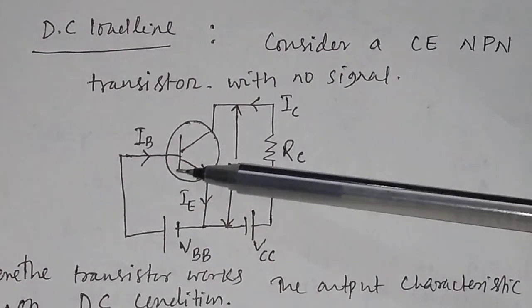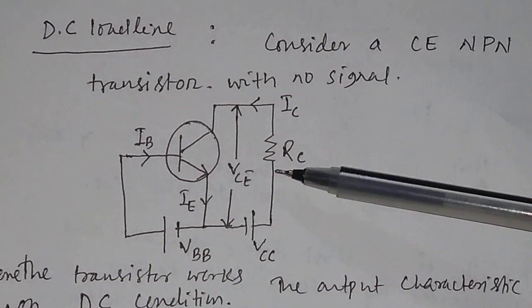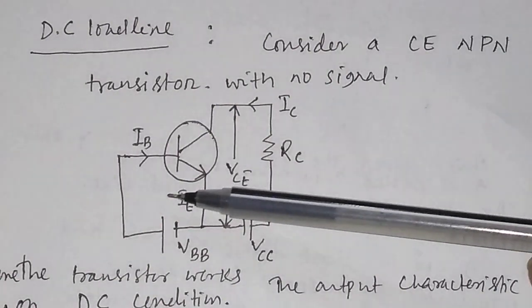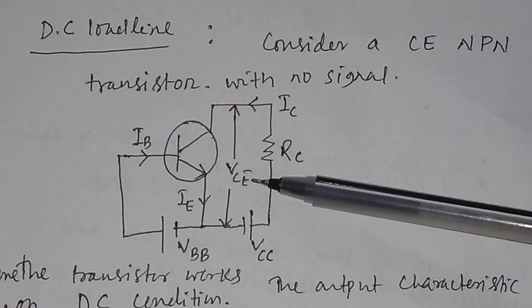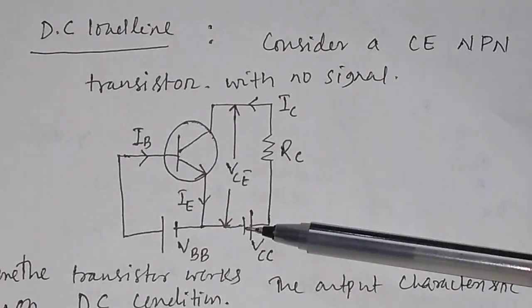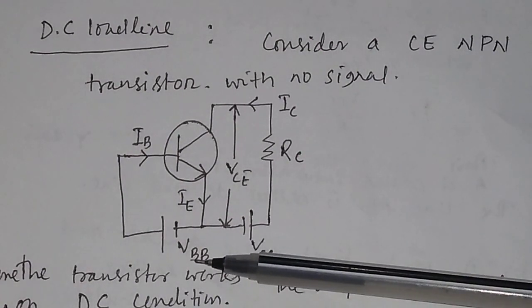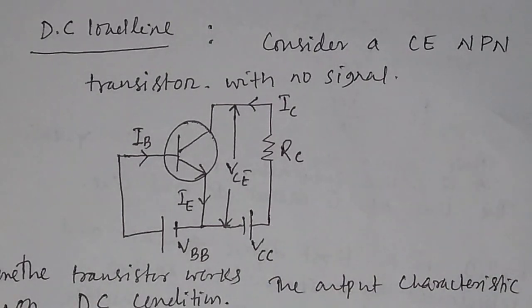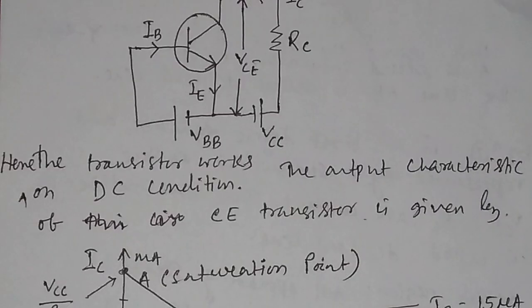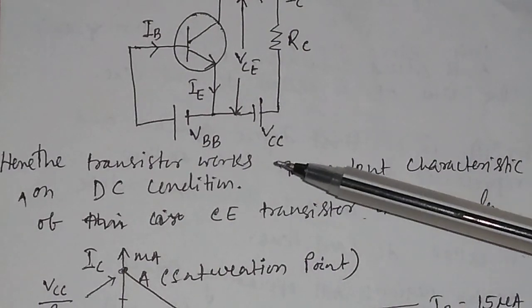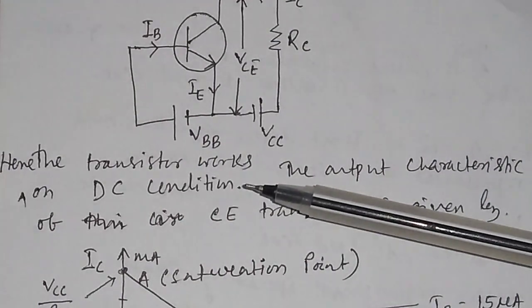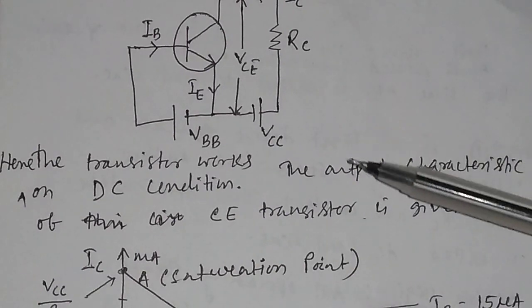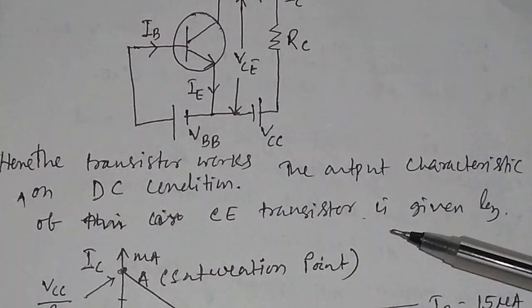While calculating the DC load line, you should not connect any signal here — no signal is connected. You only give the biasing potential in the input and in the output. So the transistor works on DC condition; there is no AC connected here.